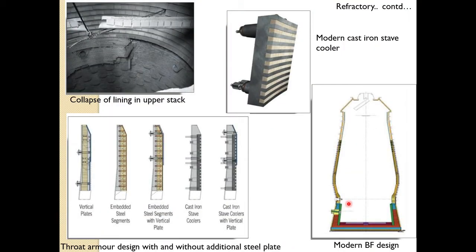In modern blast furnaces, a cast iron step cooler is used — water goes through and comes out. If cooling fails, collapse of the lining can occur in the upper region. Different insertion methods are used: a vertical plate embedded steel segment, and a cast iron step cooler with vertical plate, in the upper region where raw material hits. Different types of coolers are used in different regions depending on the nature of cooling required.